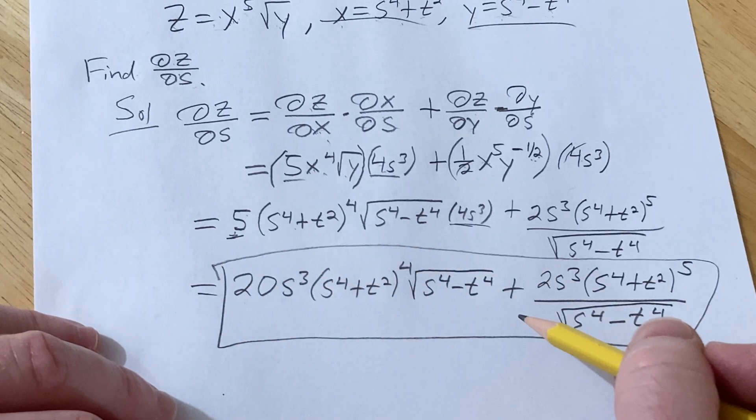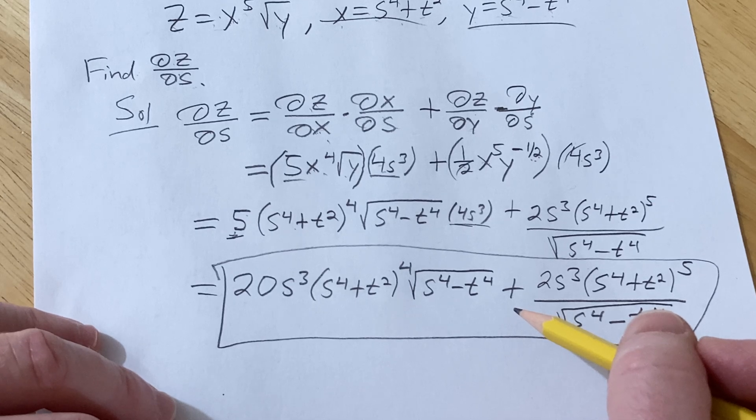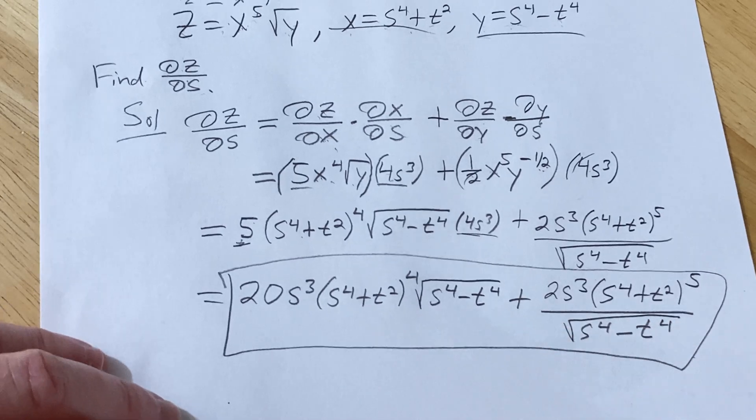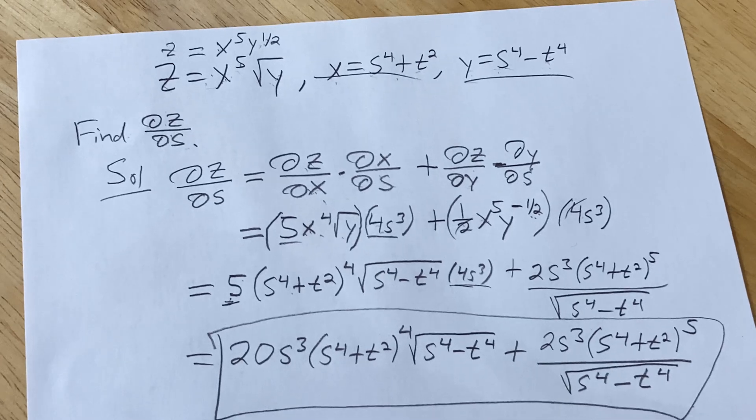And that should be it. So that's how you use the chain rule for functions of more than one variable. So yeah pretty good stuff. Take care.